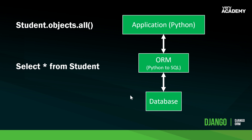In a lot of respects, object relational mapping — ORM — does what it says in its name: it takes a Python object and creates a relational mapping across to the database, translating it into SQL in order to collect data. The database then returns data to the ORM, and we map the database object back to the Python object so we can manage that data within our Django application.